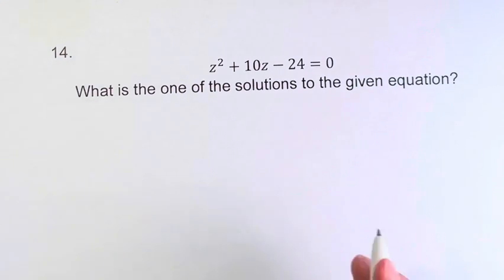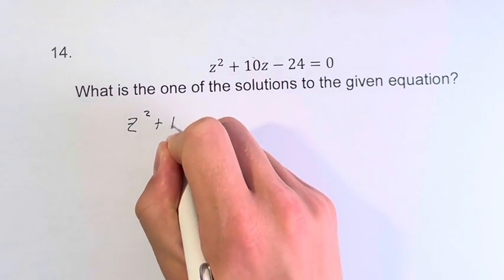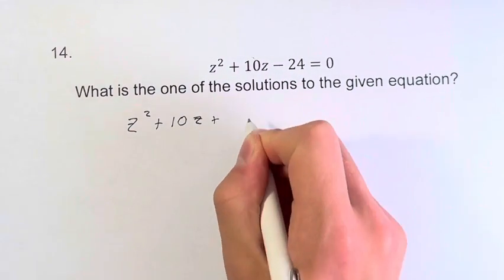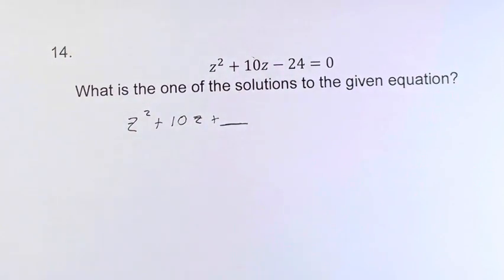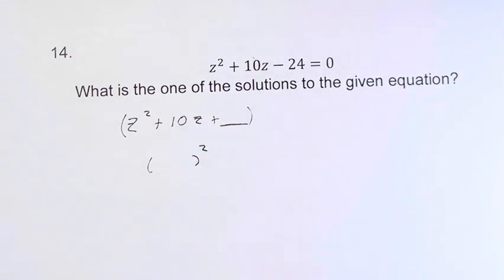And what that's going to involve is going to take these terms here, z squared plus 10z plus some number is going to be something squared. We'll find out what that is in a minute.